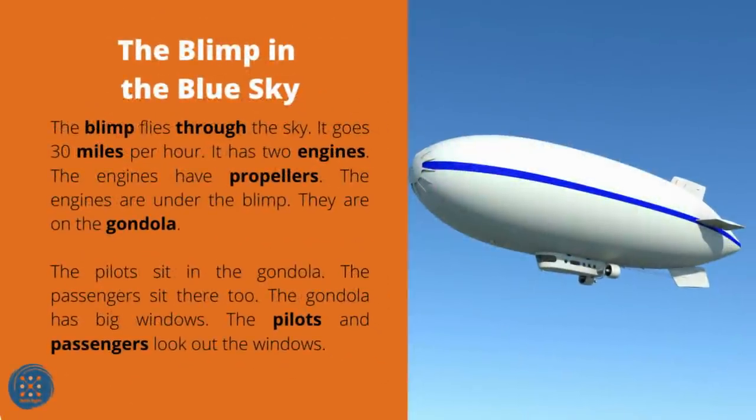The Blimp in the Blue Sky. The blimp flies through the sky at 30 miles per hour. It has two engines with propellers. The engines are under the blimp on the gondola. The pilots sit in the gondola. The passengers sit there too. The gondola has big windows — the pilots and passengers look out the windows.